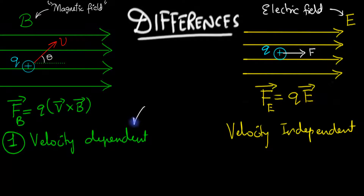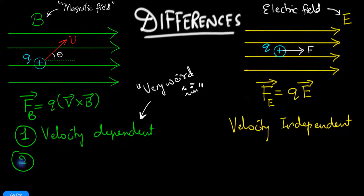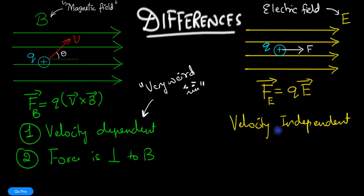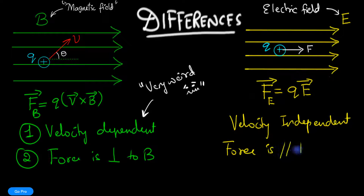This is very weird — it really is. The second difference has to do with the cross product. The cross product tells us that the magnetic force is perpendicular to the magnetic field, but in electricity that's not what we see. We always see that the force is in the same direction as the electric field, so we can say the force is parallel to the electric field.